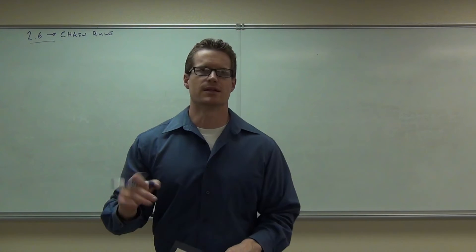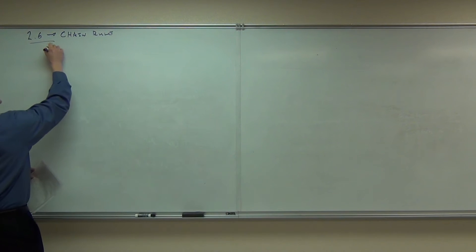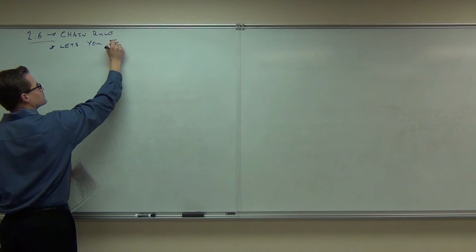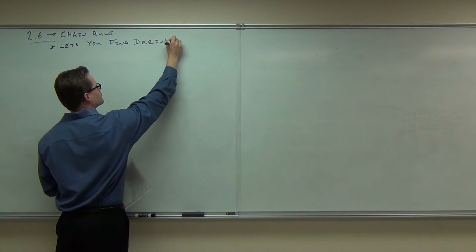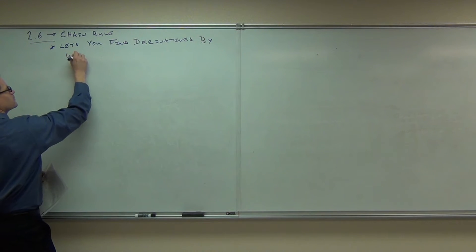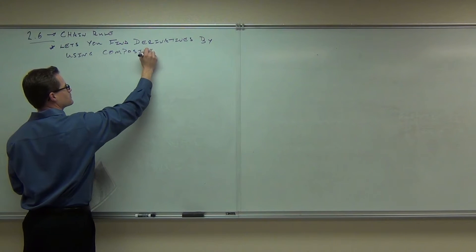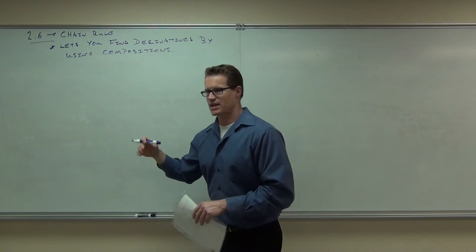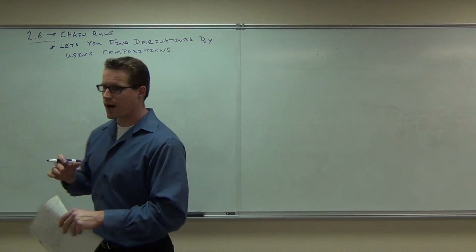So what the chain rule does - it gives you a way to do derivatives with compositions. It lets you take derivatives by using compositions. And just to refresh your memory on why we might do this, I'll give you that example again. It's on the last video, so I want to make sure it's on this one as well. This is the reason why we want to learn the chain rule.